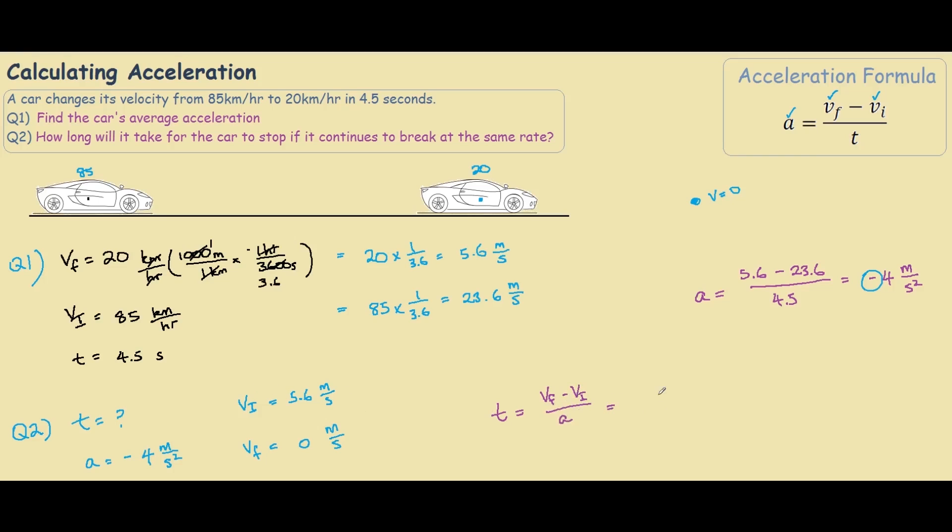And plugging all this information in, we have 0 minus 5.6 meters per second over our acceleration, which is negative 4. And as you can see, the two negatives cancel out, that makes sense because time cannot be negative. So we're left with 1.4 seconds.